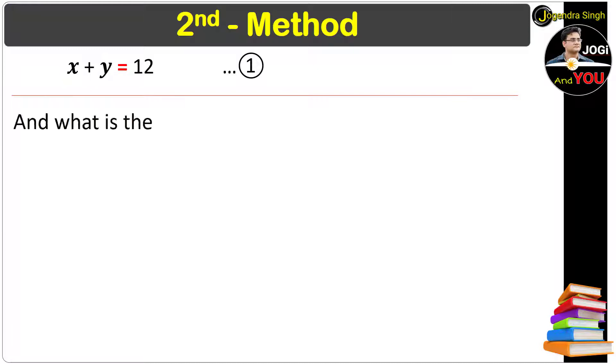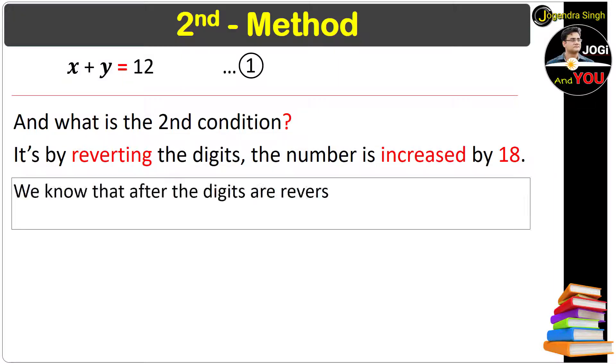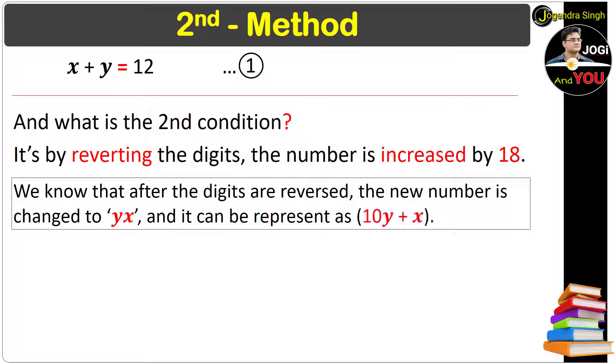And what is the second condition? It's by reverting the digits, the number is increased by 18. We know that after the digits are reversed, the new number is changed to yx, and it can be represented as 10y plus x. Then how can we write the second condition?